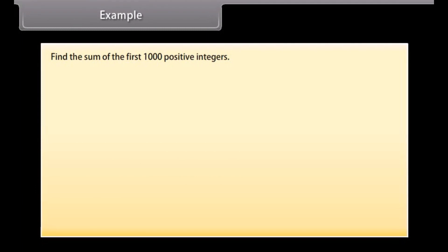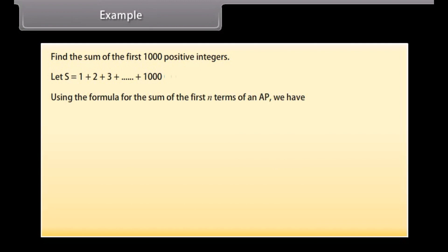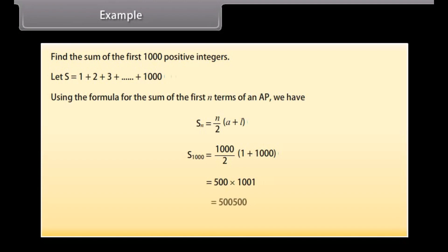Find the sum of the first 1000 positive integers. Let S equal 1 plus 2 plus 3 plus so on plus 1000. Using the formula for the sum of the first N terms of an AP, we have SN equals N upon 2 into (A plus L). Substituting the values, S1000 equals 1000 upon 2 into (1 plus 1000), equals 500 into 1001, which equals 500500. So the sum of the first 1000 positive integers is 500500.